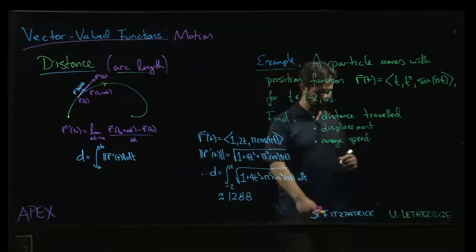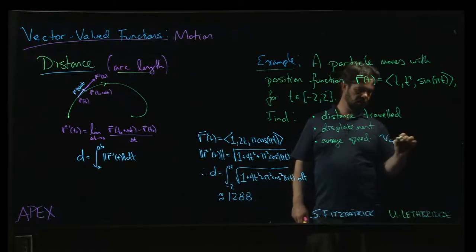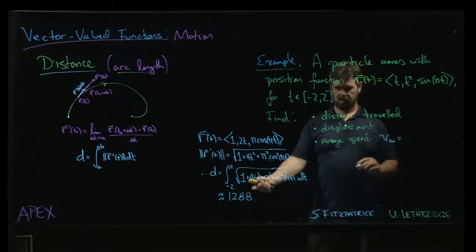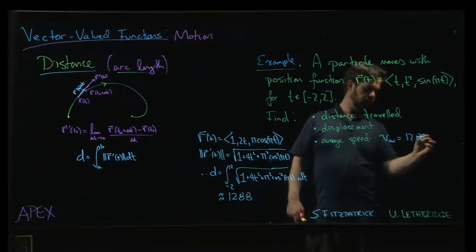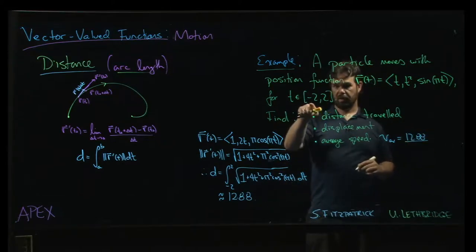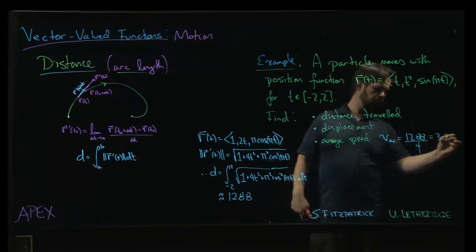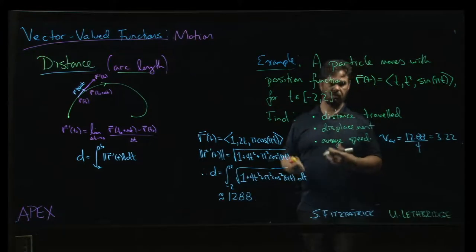So the average speed is going to be 12.88 divided by the length of the interval: 2 minus minus 2 over 4. So 3.22 is your average speed.